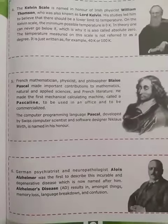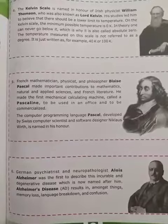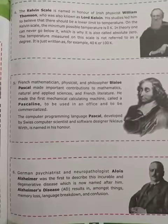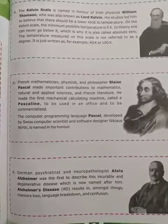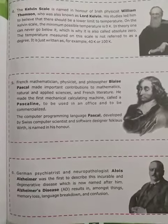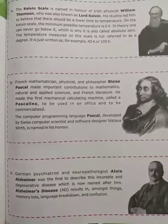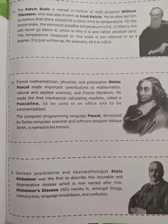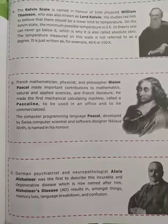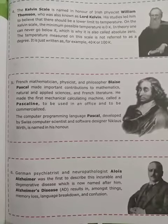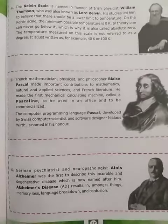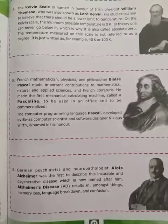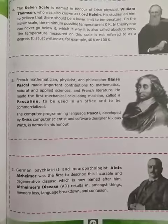K is Kelvin. In theory, one can never go below it, which is why it is also called absolute zero. The temperature measured on this scale is not referred to as degree. It is just written as, for example, 40 Kelvin or 100 Kelvin.